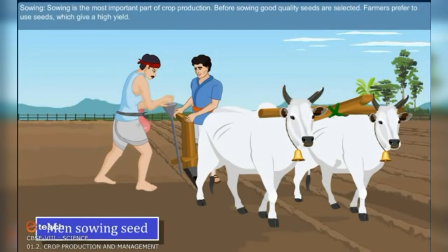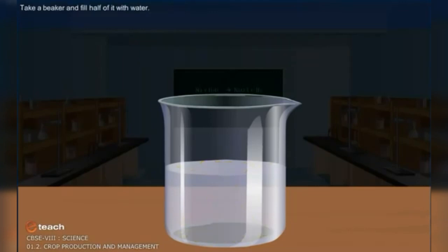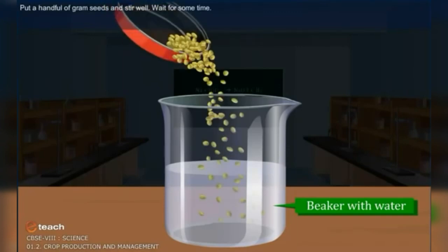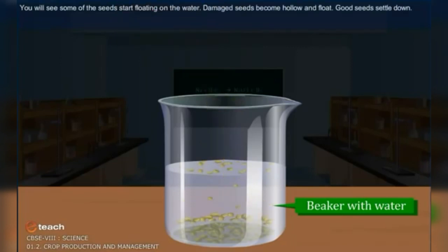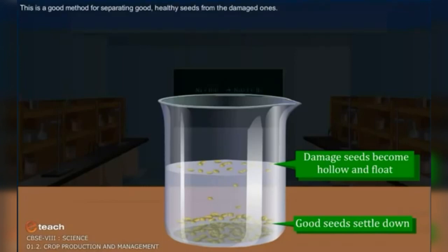Sowing is the most important part of crop production. Before sowing, good quality seeds are selected. Farmers prefer to use seeds which give a high yield. To separate good seeds from damaged ones, take a beaker filled half with water, put in a handful of gram seeds and stir well. Wait for some time — damaged seeds become hollow and float, while good seeds settle down.